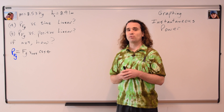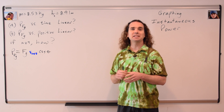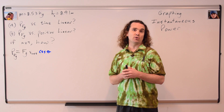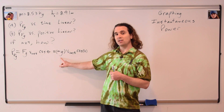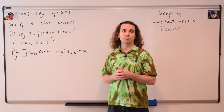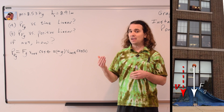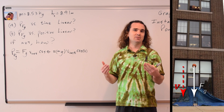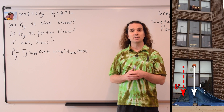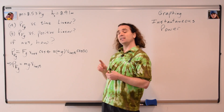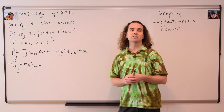Instantaneous power delivered by the force of gravity equals the force of gravity times the instantaneous velocity times the cosine of the angle theta between those two vectors. We can substitute mass times the acceleration due to gravity for the force of gravity. The force of gravity is down and the velocity of the pumpkin is down, so the angle theta is zero degrees. The cosine of zero degrees is one.